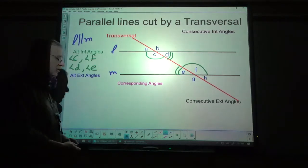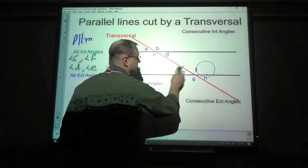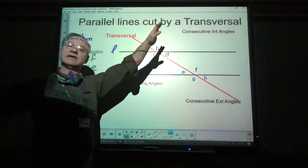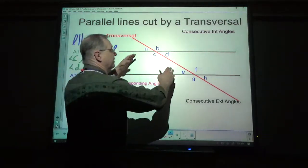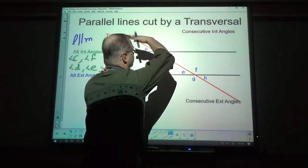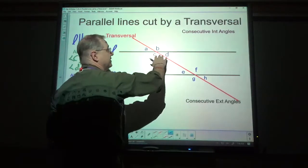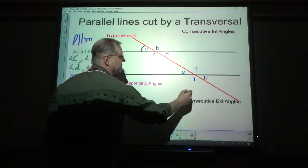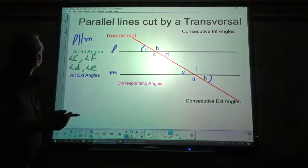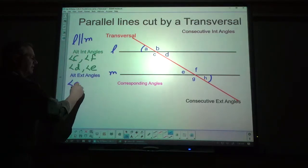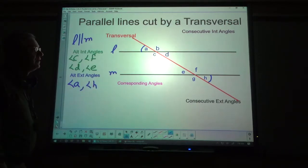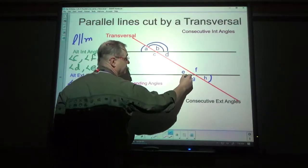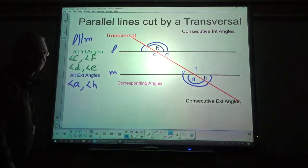Now let's look at alternate exterior angles. Exterior: A, B, G, and H are in the exterior — they're outside. It doesn't matter if this is tipped up or sideways; it's between versus outside. So if we take A, that's going to be alternate exterior with H — opposite sides of the transversal. Angle A and angle H. And B and G are alternate exterior.